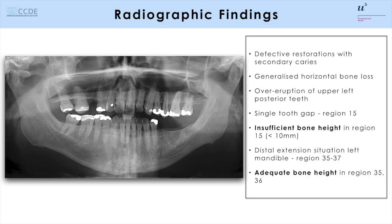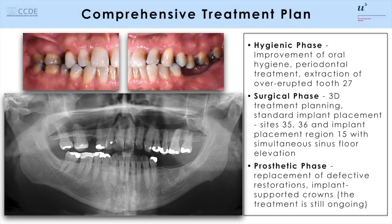We have in the left mandible a sufficient bone height for the placement of implants, whereas in the right maxilla the vertical bone height is reduced due to the floor of the maxillary sinus. A comprehensive treatment plan is established including first a hygienic phase to improve oral hygiene, minor periodontal treatment and extraction of tooth number 27, followed by a surgical phase with implant placement in the left mandible and in the right maxilla. At the end, the prosthetic phase will follow to replace all the defective restorations and to produce implant-supported crowns.